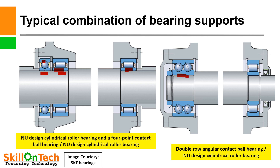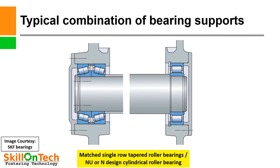A double-row angular contact ball bearing will also provide axial movements, take axial loads, and compensate angular misalignments. The NU design cylindrical roller bearing provides axial movement and takes axial loads. The picture also shows a matched single-row tapered roller bearing combined with a NU or N design cylindrical roller bearing. These are typical combinations of bearing supports provided for locating and non-locating bearings.